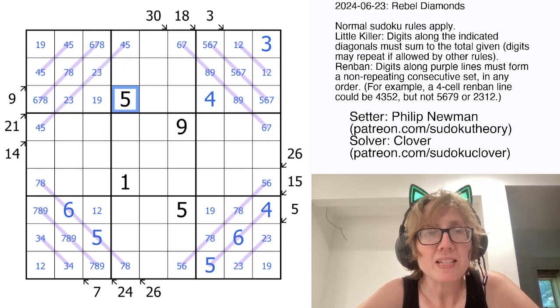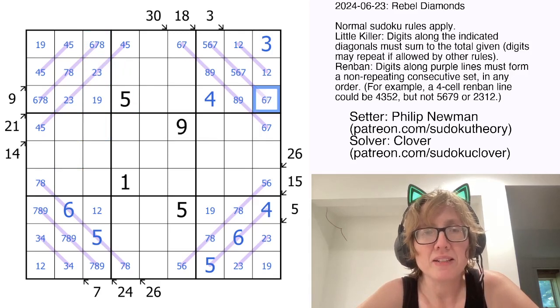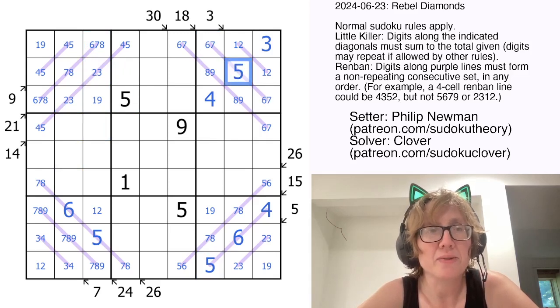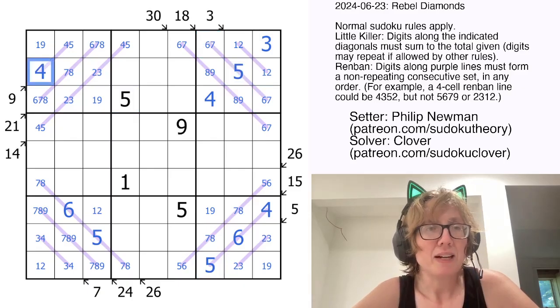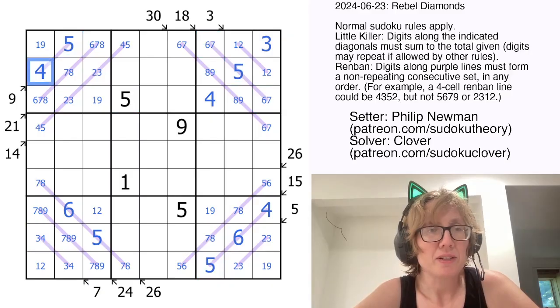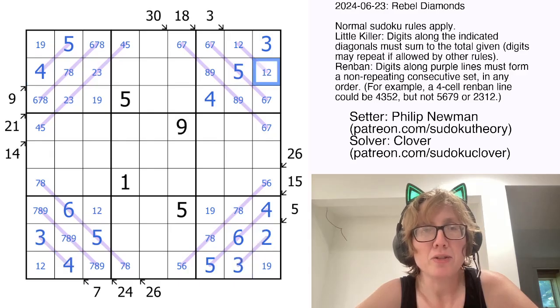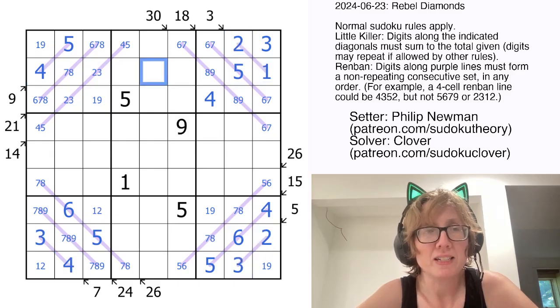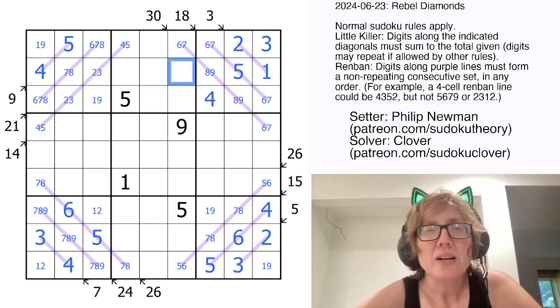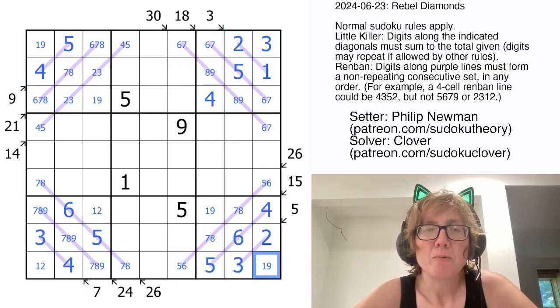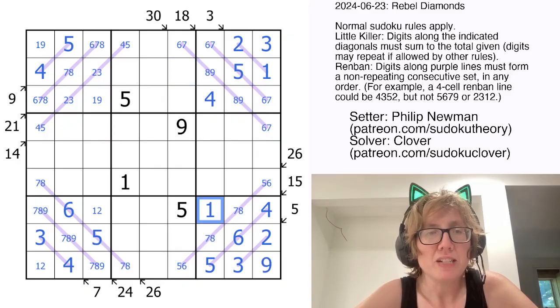So this 5 here eliminates 5 from there. This 5 eliminates 5. So that cell is going to contain a 5. That 5 makes this 4 and 5 in this order. This 4 makes this a 3. The 3 makes this a 2. And the 2 makes this cell a 1. I can actually get one more thing out of this. So that 1 gives me a 9 and a 1. And the 9 is going to eliminate 9 from there.